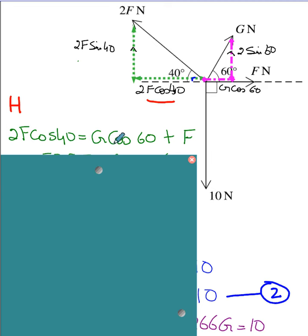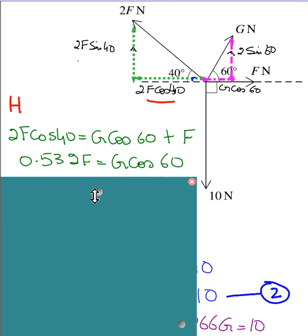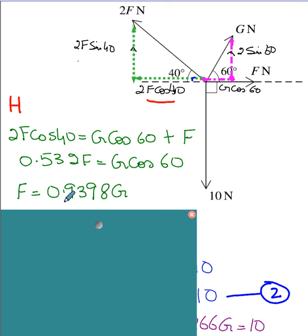2F cos 40 is equal to G cos 60 plus F, and if you manipulate it to find the value, which I have done here, I got F is equal to 0.9398 G. You can make G the subject—choice is yours—because we will solve simultaneously after getting the other equation from vertical direction.